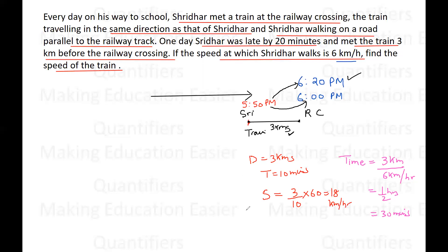Now this is one method to find the speed of the train. Another method — you could have done it mentally. Just see here: Sridhar is taking 30 minutes and the train is taking 10 minutes. So time taken by train is one-third that of Sridhar. If time is one-third, that means the speed of the train will be three times that of Sridhar. So speed of the train will be three times six, which is 18 kilometers per hour. You could have used this method also.